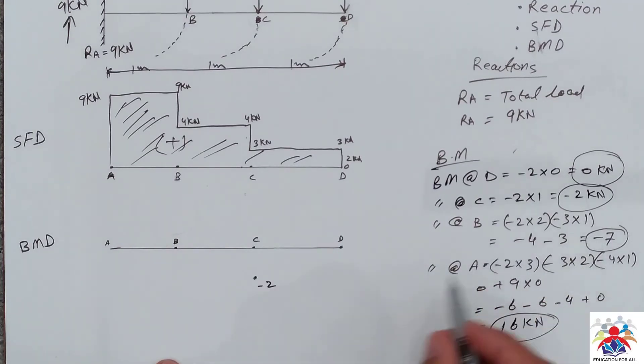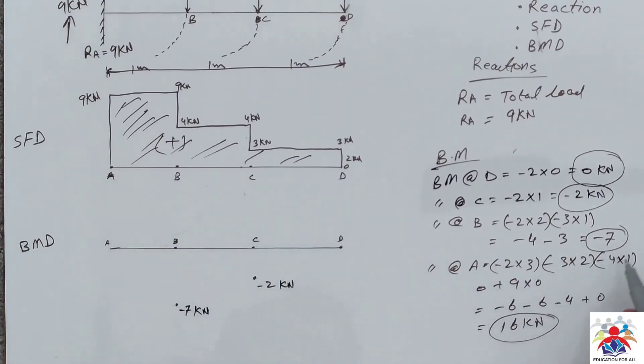At point B we are minus 7, so minus 7 would be somewhere here. This is all kilonewtons. And at point A we have 16, so 16 will be somewhere here, mostly minus 16, so minus 16.